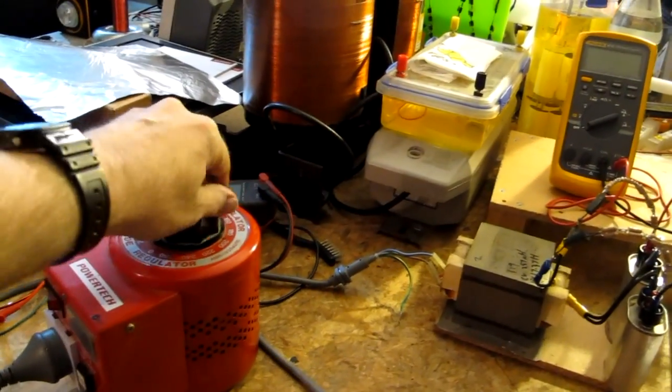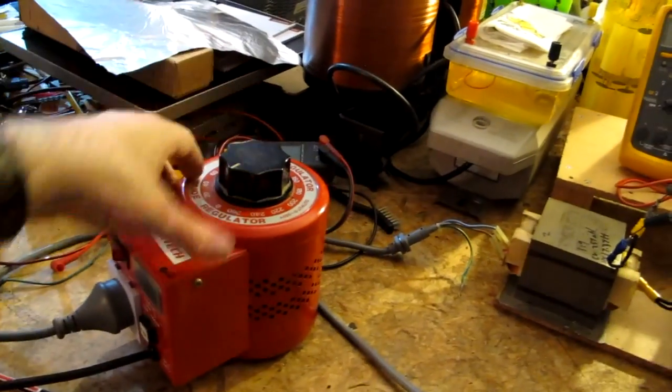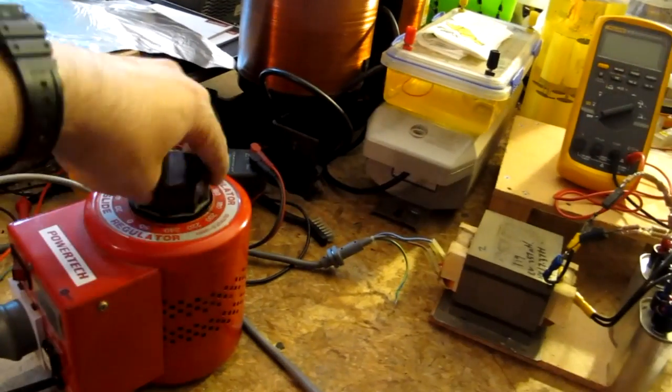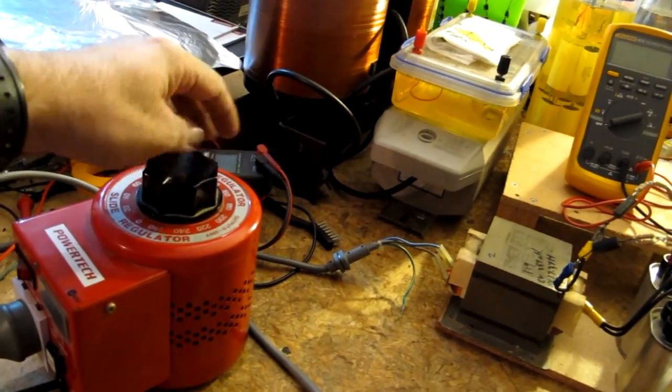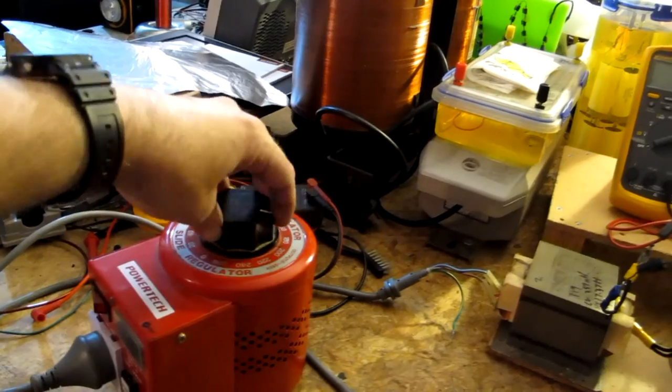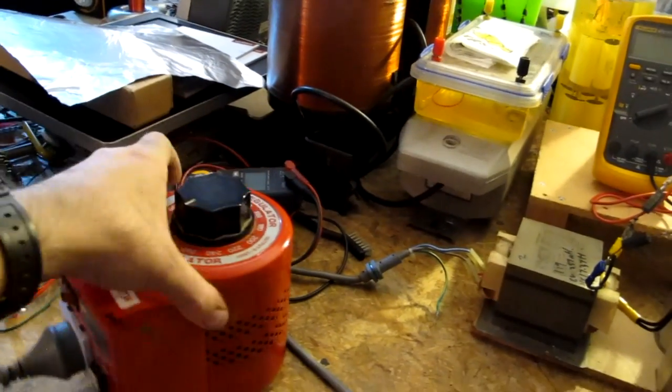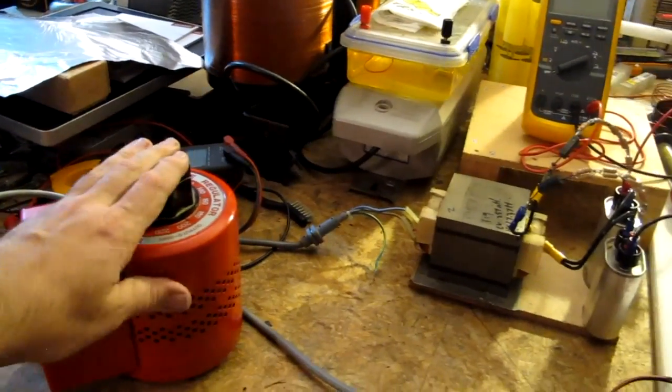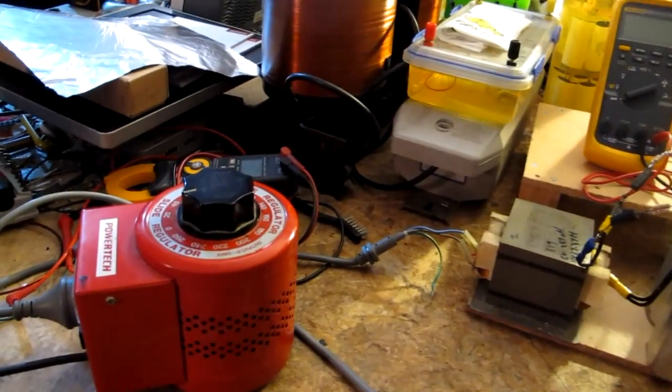So I start off with a Variac which is basically an AC auto transformer. It takes the mains in and then I get to vary it from zero, and this one puts out about 260 volts at maximum. They don't provide isolation but they are very handy if you want to have varying different voltages.